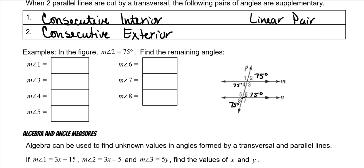And also the vertical angles — these are also congruent. So to figure out the other angles, same side interior, consecutive interior: both of these together have to be 180. So if you do 180 minus 75, you get 105 for this one. And then alternate exterior are congruent, so this one is also 105.